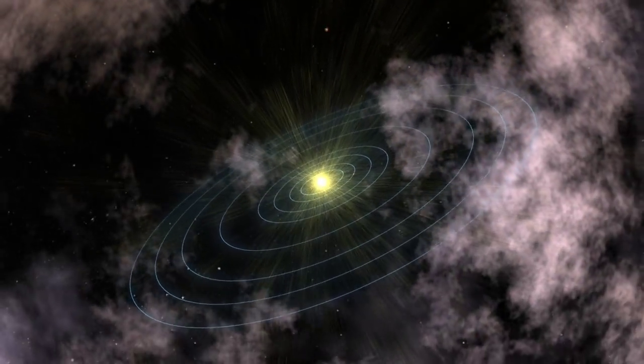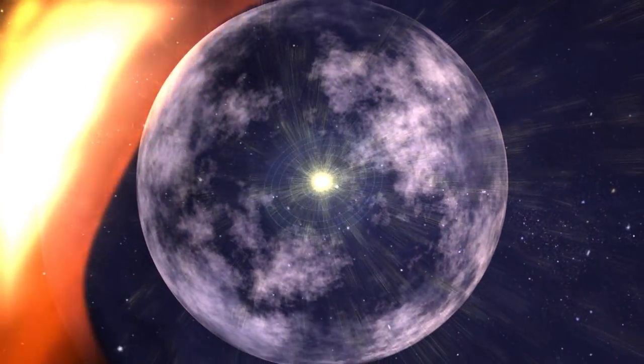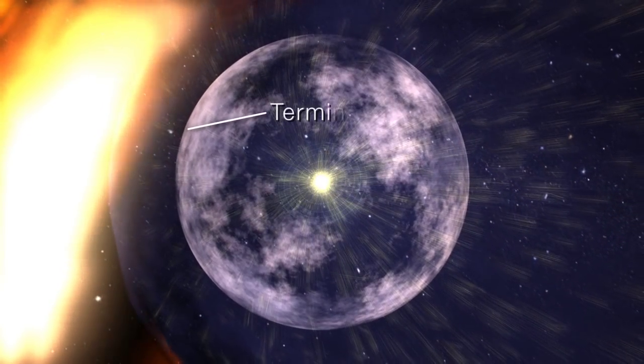As the solar wind travels out from the Sun, it pushes against the galactic medium and abruptly slows down. This is called the termination shock.